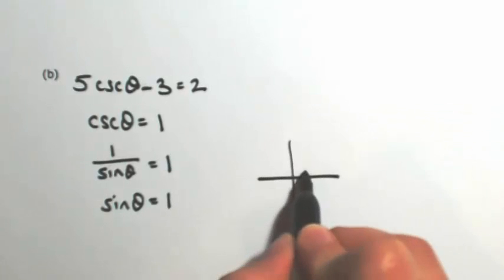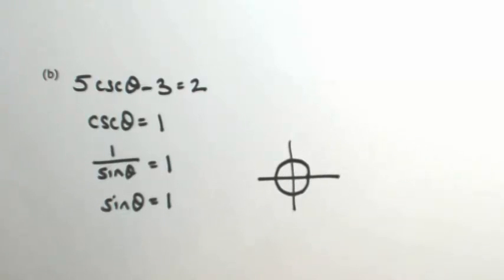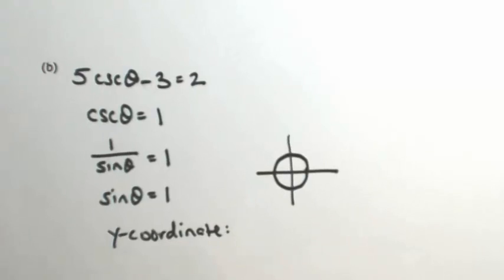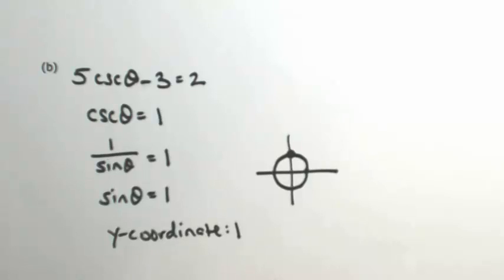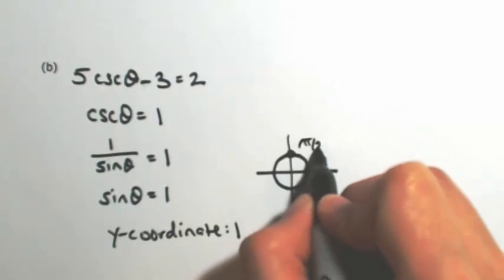Again, using a unit circle, 0 to 2π, sine is the y coordinate. So I'm looking for the angle or angles whose y coordinate is 1. That's only in one spot, which is π/2.